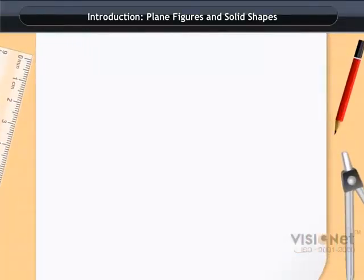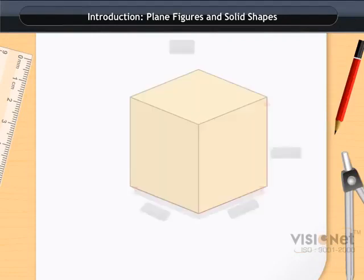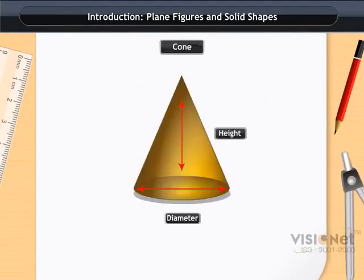Introduction: Plain figures and solid shapes. You have already learnt about the two-dimensional shapes in the previous chapter. In our day-to-day life, we see several objects like books, cubes, ice-cream cones, etc. around us, which have different shapes.